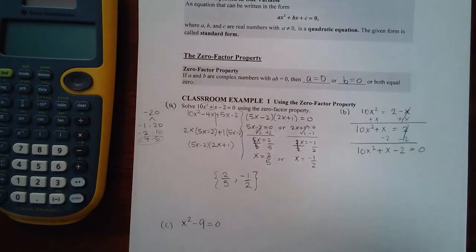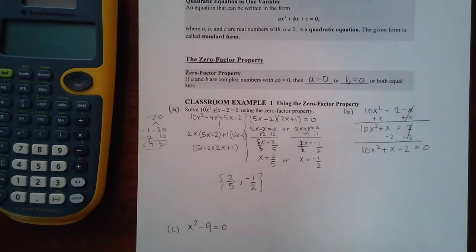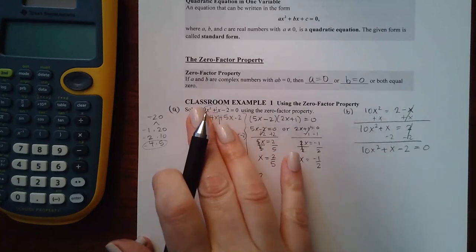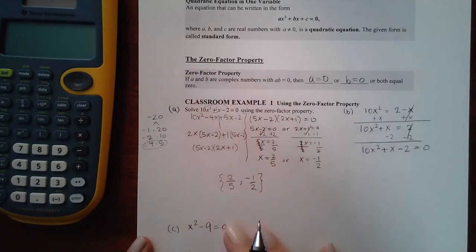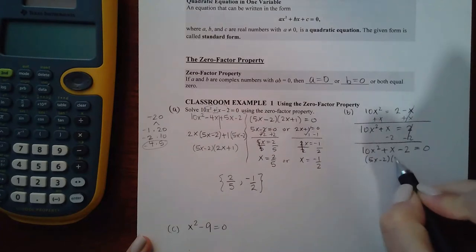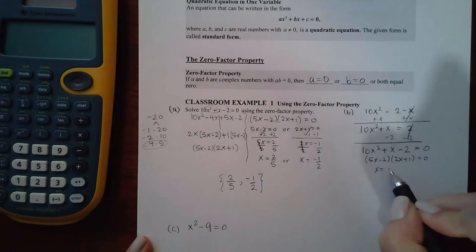Notice that I didn't combine them because none of these are like terms—they cannot be combined. All that can be done is them written next to each other. Notice that this is this same problem here, so I don't need to redo everything. I already know that this is going to factor into this because I've already done it, and I already know that I'm going to get 2/5 as an answer here and negative 1/2 as the other answer.